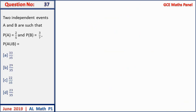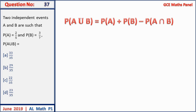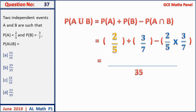Question 37: two independent events A and B with P(A) = 2/5 and P(B) = 3/7. Find P(A ∪ B). Since independent, P(A ∩ B) = P(A)×P(B) = 6/35. Using P(A ∪ B) = P(A) + P(B) − P(A ∩ B): with LCM 35, that gives 14/35 + 15/35 − 6/35 = 23/35. Answer D.